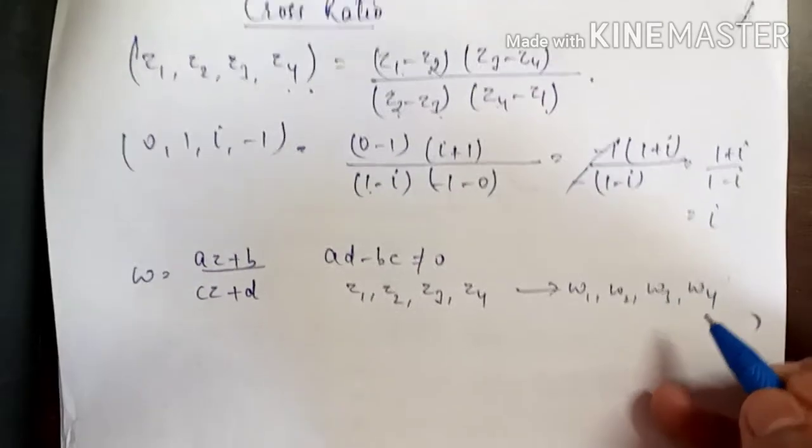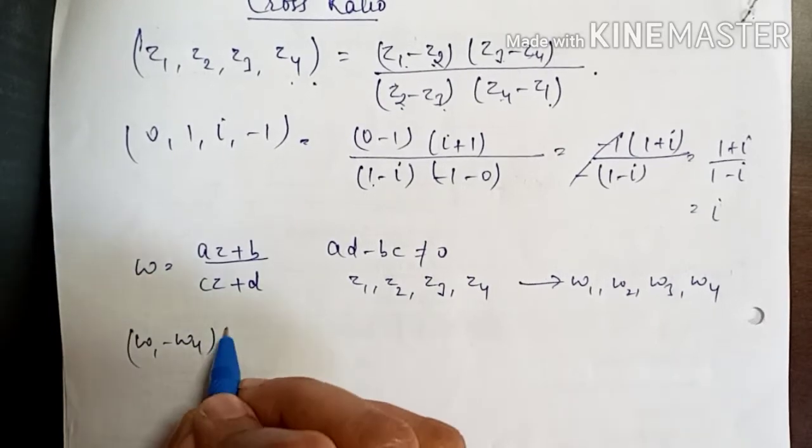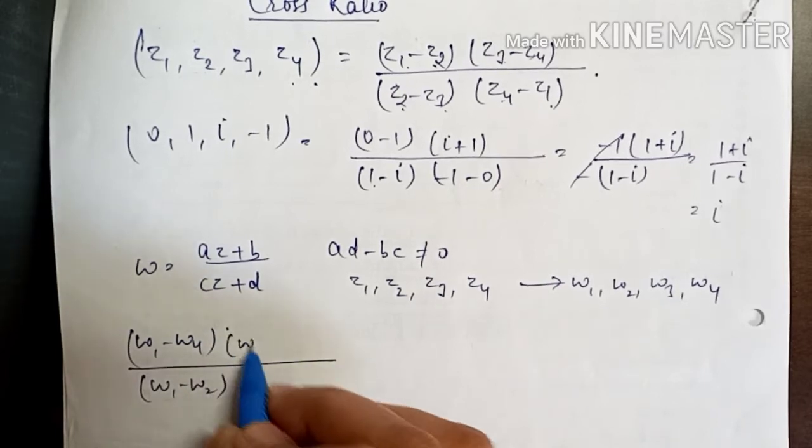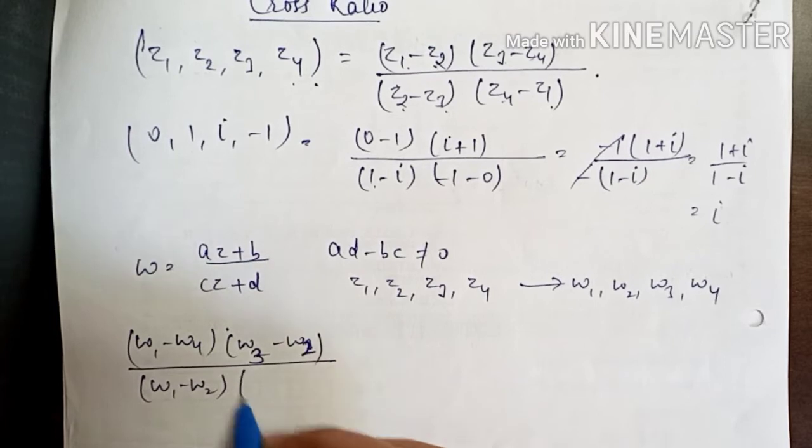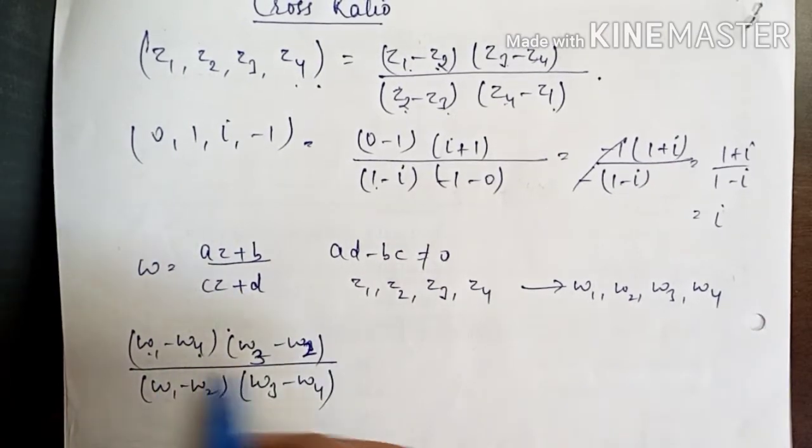These four points, then W1 minus W4, W1 minus W2, W2 minus W3, W3 minus W4.